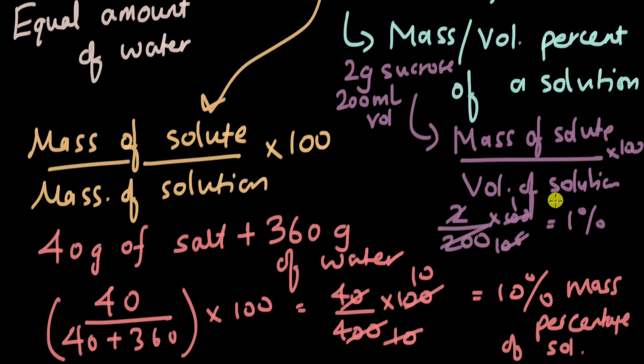We have assumed one thing here: when we add sucrose, there is no change in the volume of the water itself. You might wonder whether the volume of the solution would increase, but we are assuming that the effect is negligible, so the volume of the solution remains 200 ml.